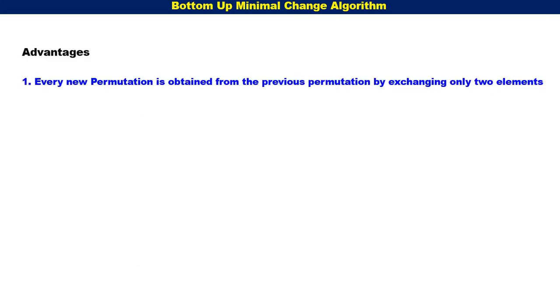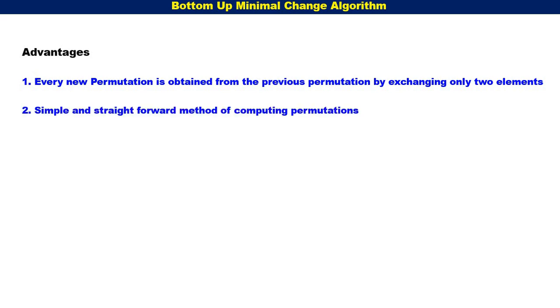What are the advantages of this bottom-up minimal change algorithm? Every new permutation is obtained from the previous permutation by exchanging only two elements — only one exchange is required. When writing an algorithm, any permutation can be obtained by just one exchange of two elements. That is the specialty. It is also a simple and straightforward method of computing permutations.